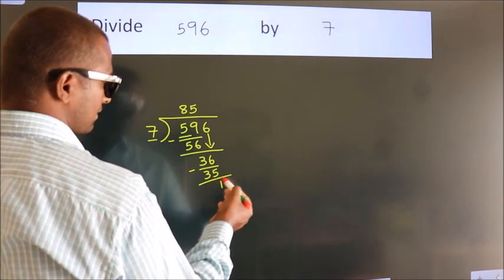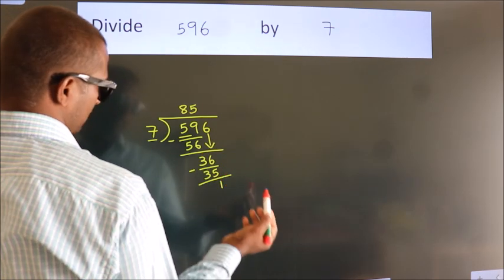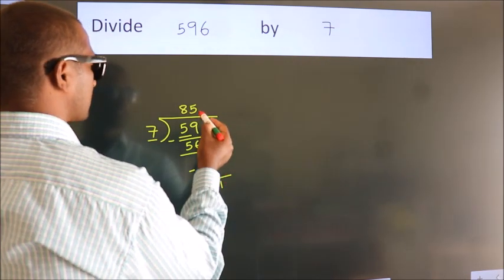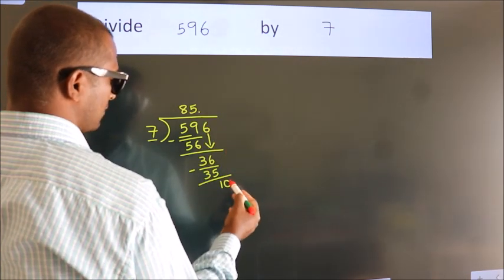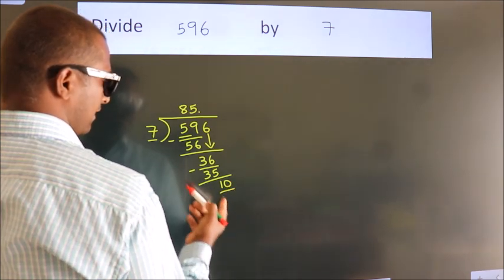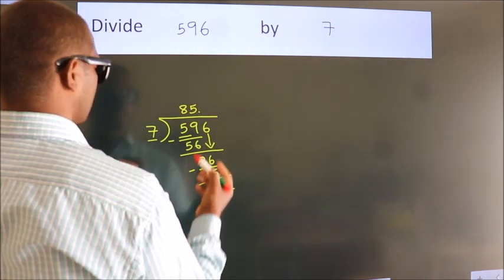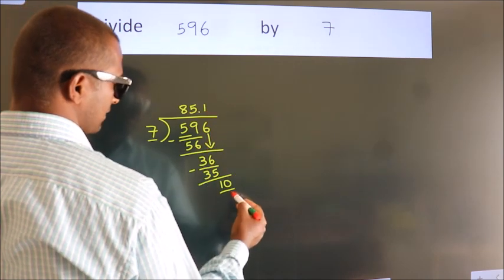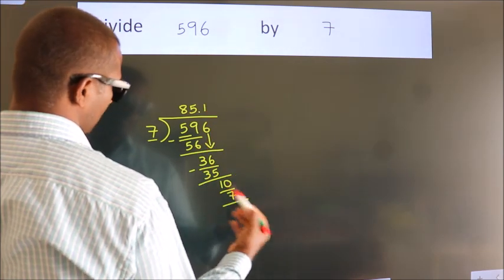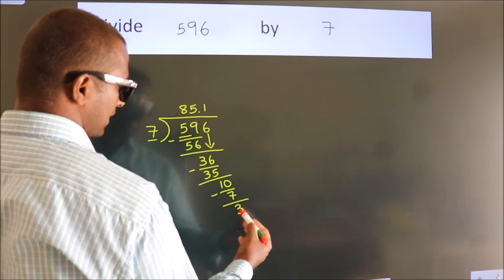After this no more numbers to bring down. So what we do is we put dot, take 0. So 10. A number close to 10 in the 7 table is 7 times 1, 7. Now we subtract. We get 3.